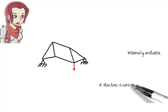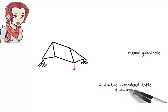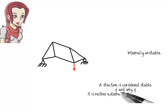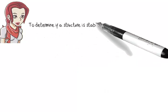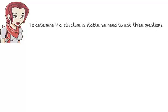A structure is said to be stable if, and only if, it is neither externally nor internally unstable. To determine if a structure is stable, we need to ask three questions.